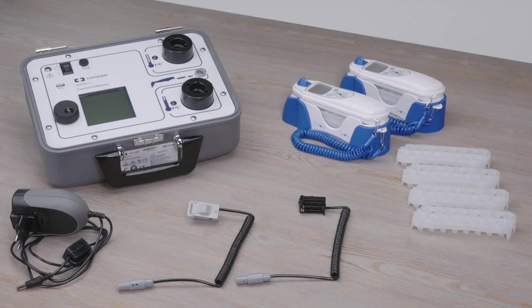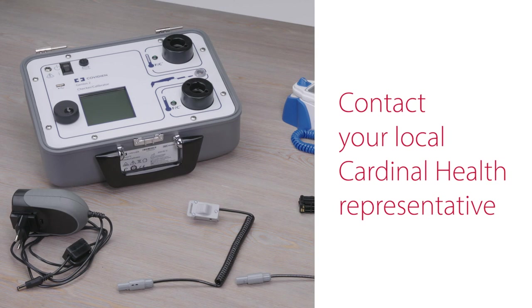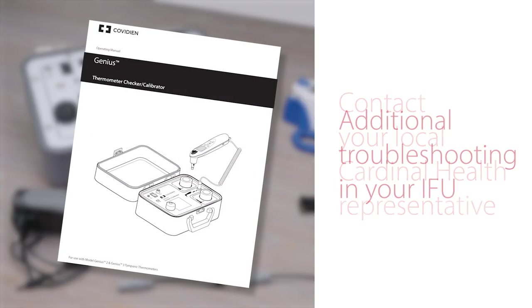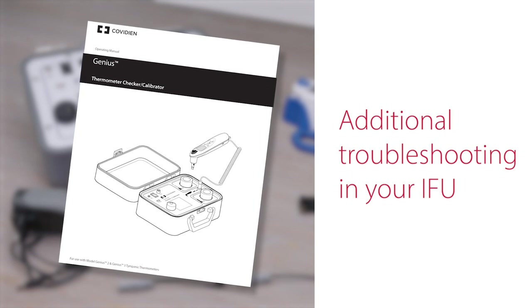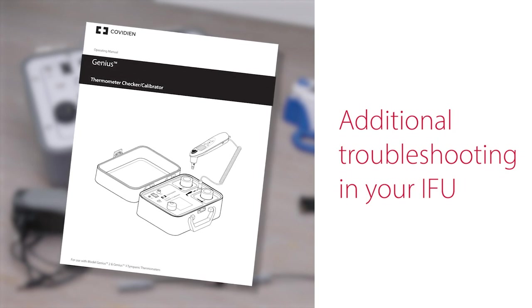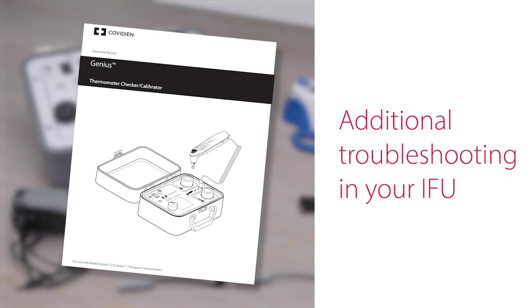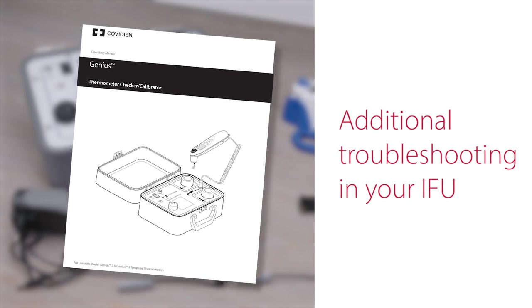If you experience any difficulty calibrating your Genius thermometers, or if you need to order new and or additional thermometers or probe covers, please contact your local Cardinal Health representative. Additional troubleshooting steps can be found within the Checker Calibrator IFU. If you do not have a copy of the IFU, please let us know, and we'd be happy to provide one to you.